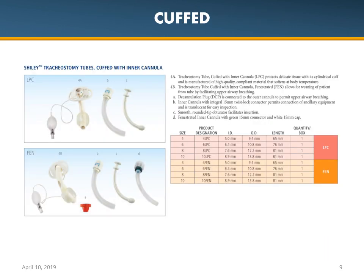Looking at cuffed tubes — there are many different types. Cuffed tubes are essential for any type of positive pressure ventilation. Obstructions of a cuffed tracheostomy tube could be life-threatening, so any time you have a cuffed tube it's essential to have a dual cannula in place, because patency is critical. An inner cannula can easily be removed and replaced, which is why we like to have one in place.